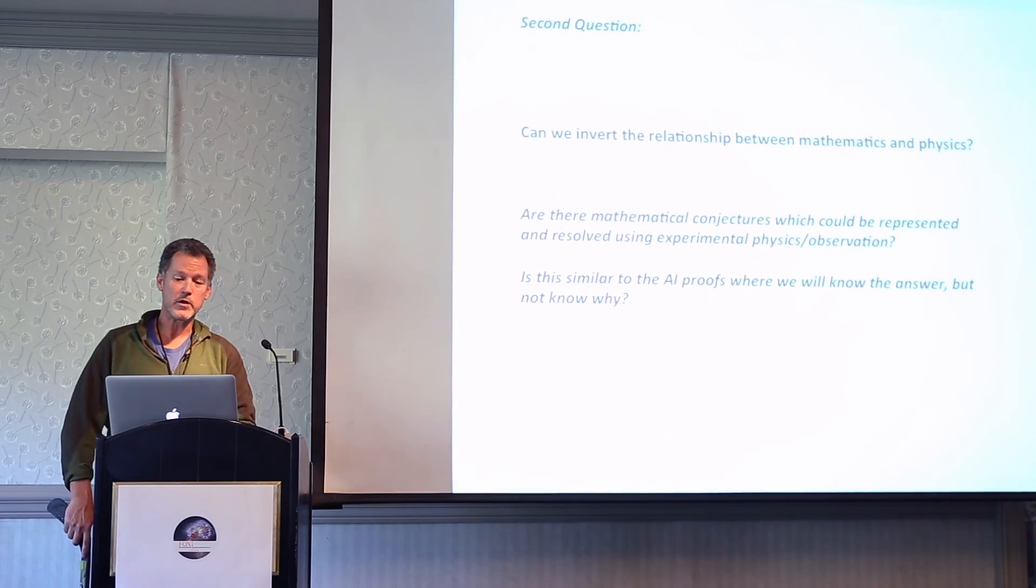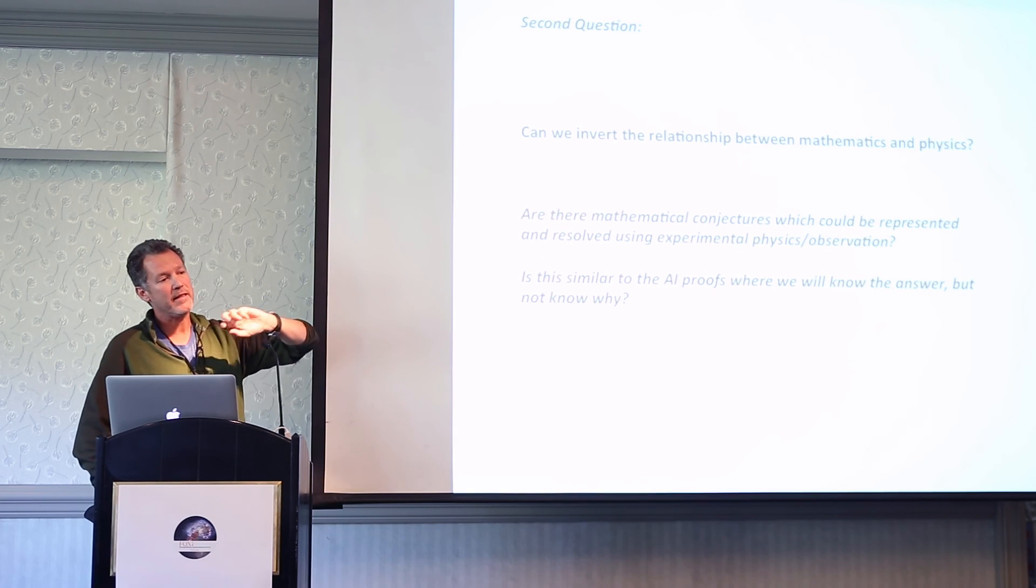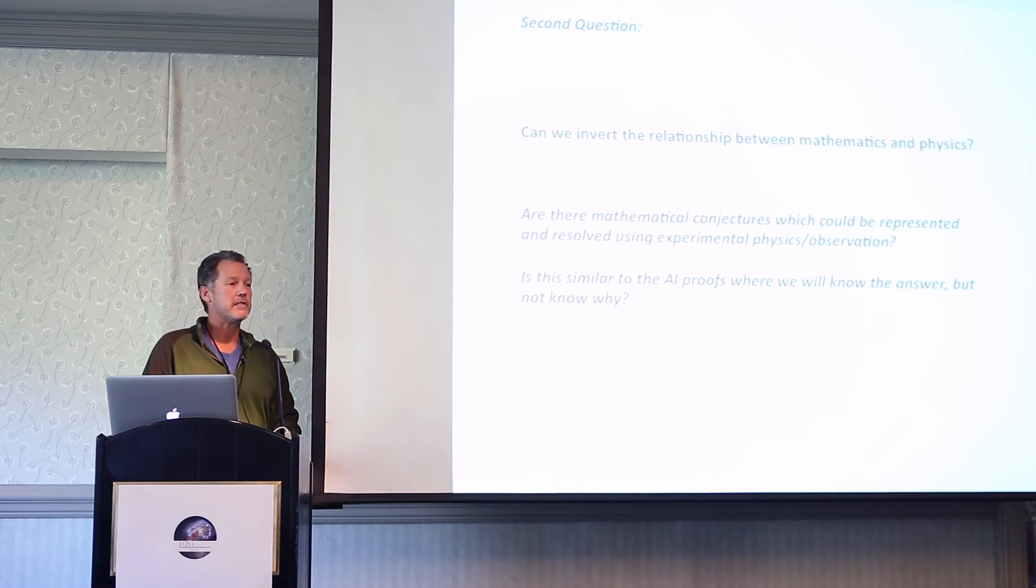Second question: can we turn the relationship between math and physics around? Can we use physics to actually go and make a measurement and determine any of the interesting conjectures? Is there an experiment that I could do that would tell me something about number theory? I won't know why but I'll know the answer. Can we turn this around? Instead of always using math to describe physics, can we do some experimental math? So there you go, those are my two questions. That's my talk.